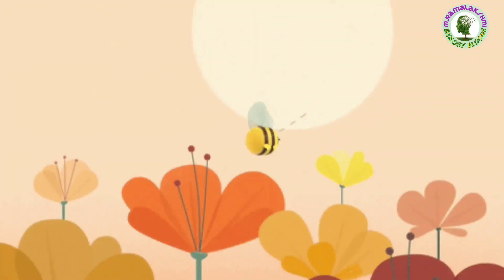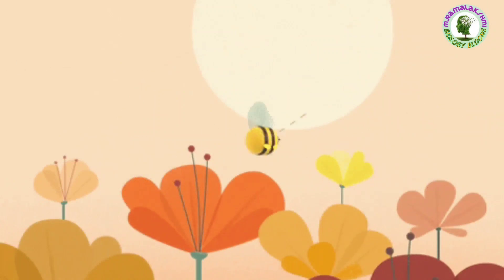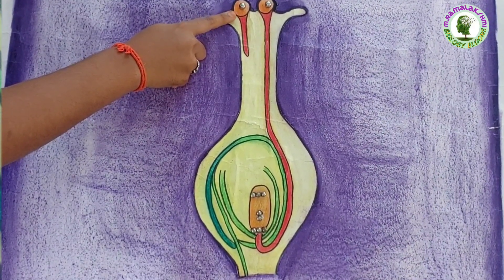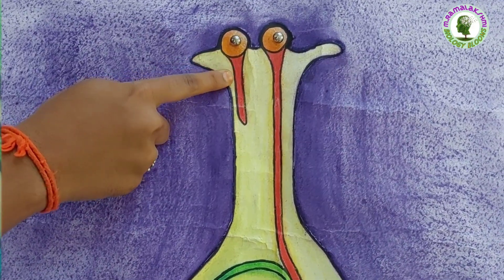We know that transfer of pollen grain from anther to stigma is known as pollination. When pollen reaches the stigma, stigma secretes a sugary substance which stimulates the growth of the pollen tube.